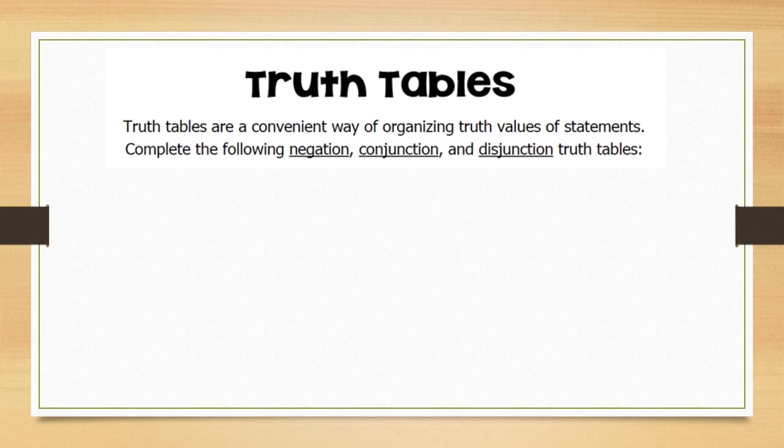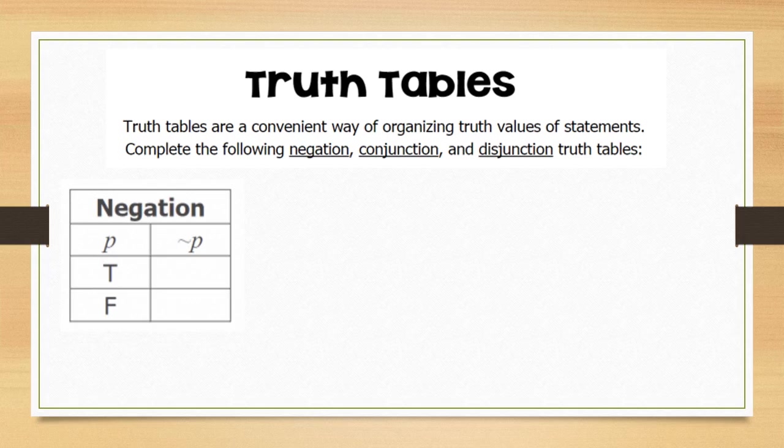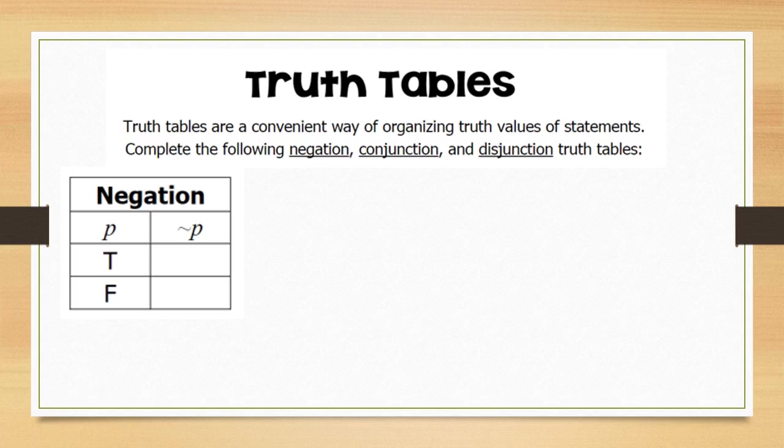This leads us to truth tables, which are a great way to organize your data. They can get complex, so you have to know your rules well. To establish a baseline: if our original statement p is true and we take the opposite, not p will be false.